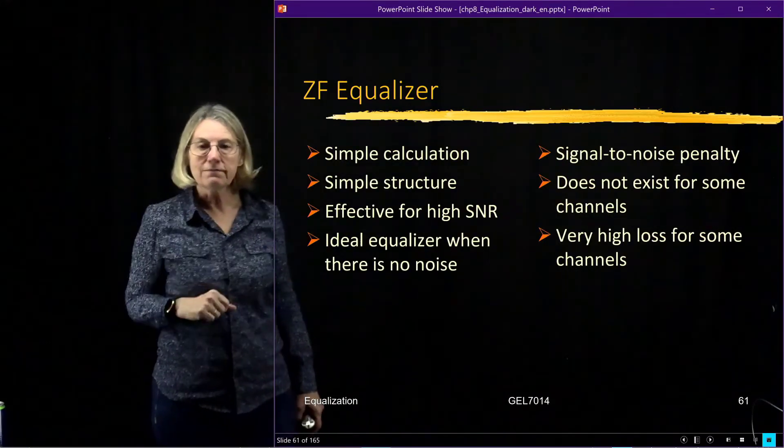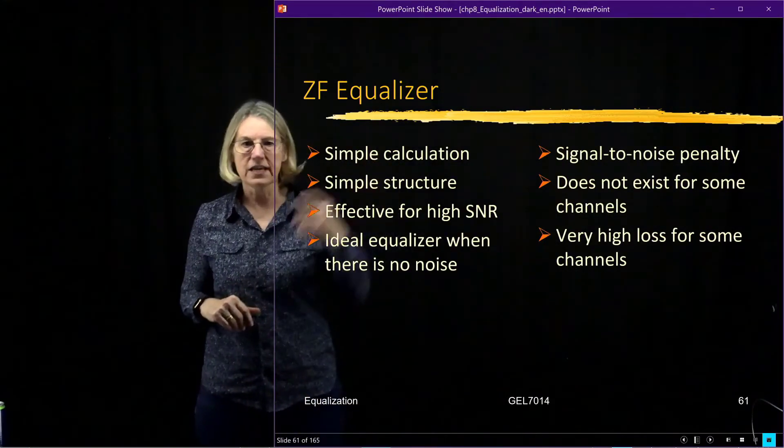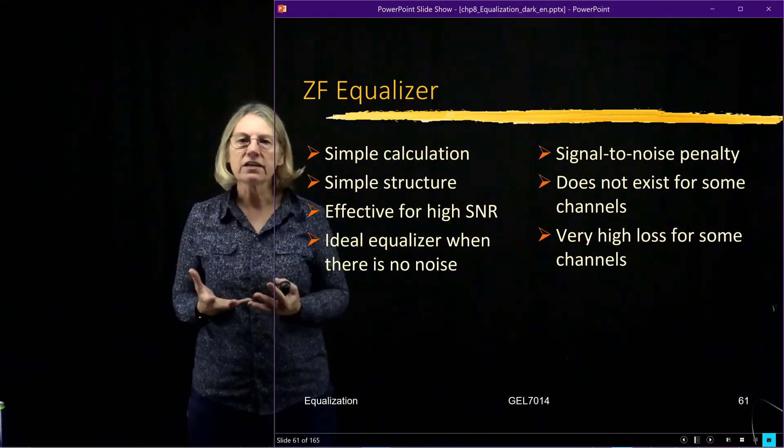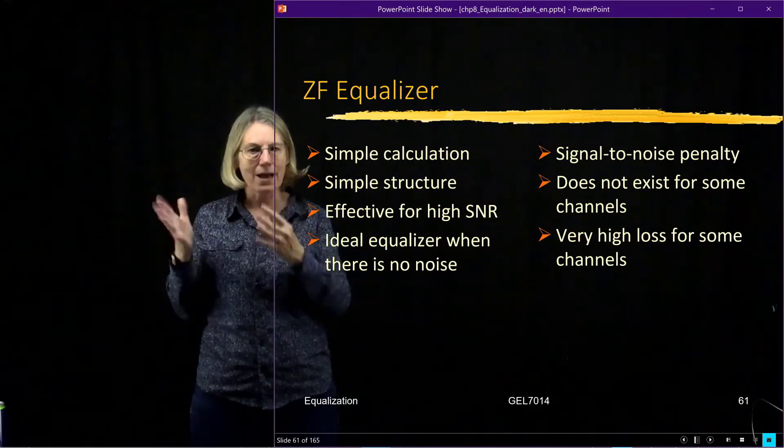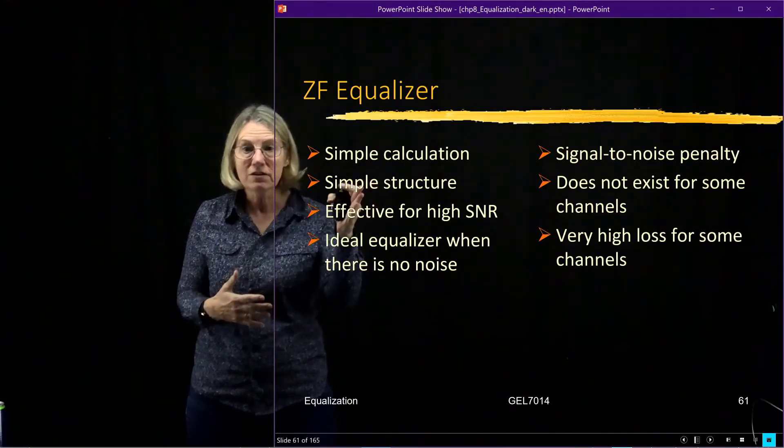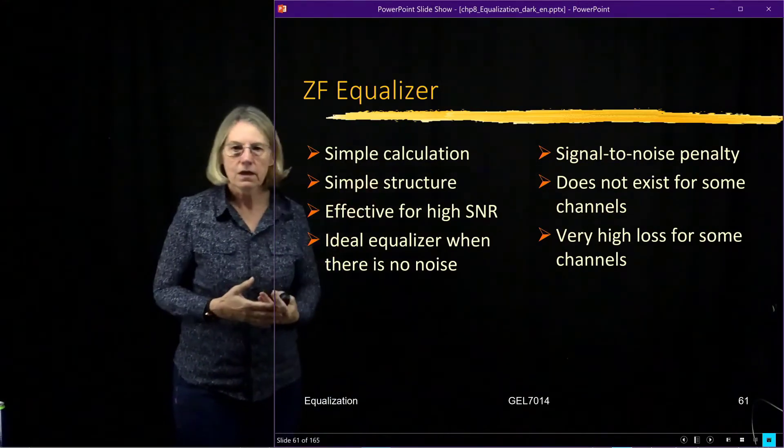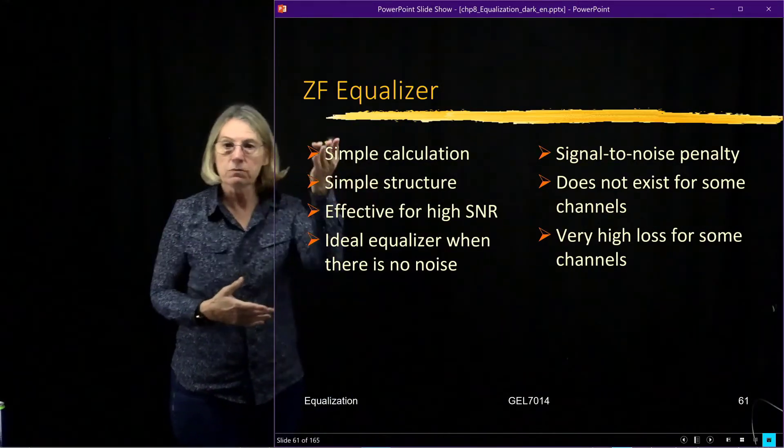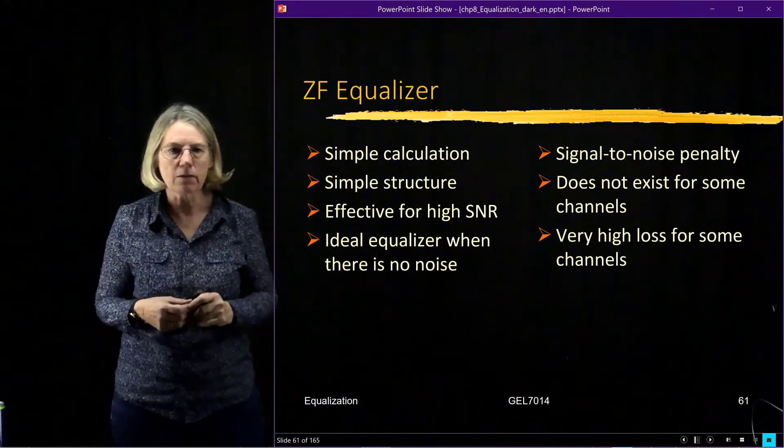So in conclusion, the zero forcing equalizer involves simple calculations, right? It's just a tap delay line, very simple structure, and the calculations have to be made are reasonable. We have to invert a matrix—it's a Toeplitz matrix—that helps.